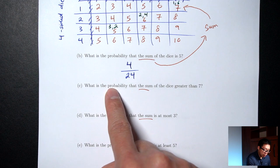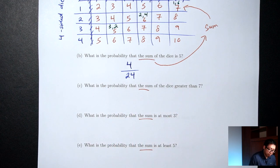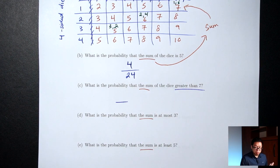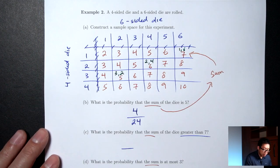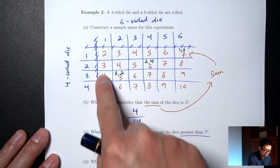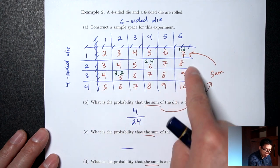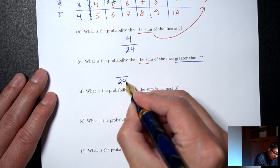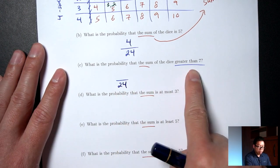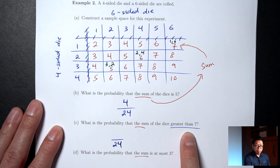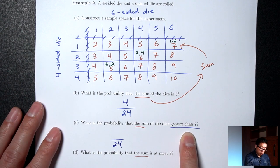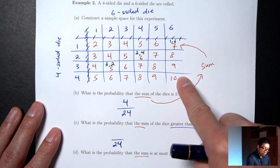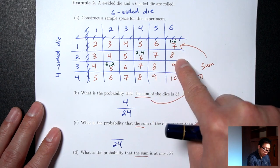Part C: what's the probability that the sum is greater than 7? Bottom is still 24. Greater than 7 means bigger than 7, so that's the 8s, 9s, and 10s in the table. Counting those: 1+2+3 = 6 outcomes. Probability is 6/24.